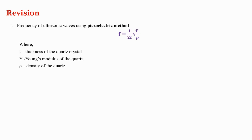First, let's have some revision from our previous video. The frequency of ultrasonic waves can be calculated using the piezoelectric method with the formula: f = 1/(2t) √(Y/ρ), where t is the thickness of the quartz crystal, Y is the Young's modulus of the quartz, and ρ is the density of the quartz crystal. This formula is used to calculate the frequency of sound waves generated by the piezoelectric method.